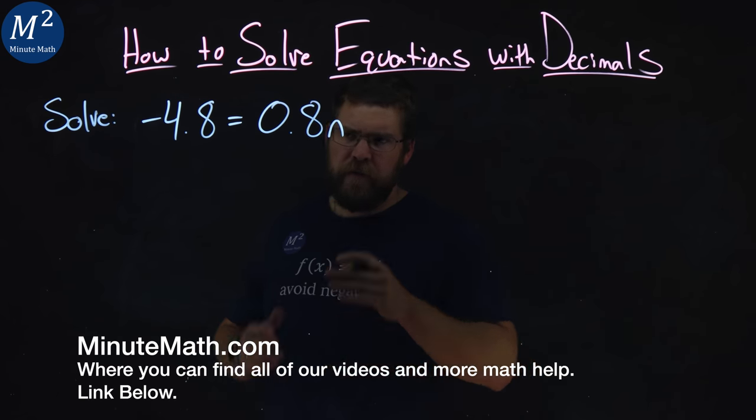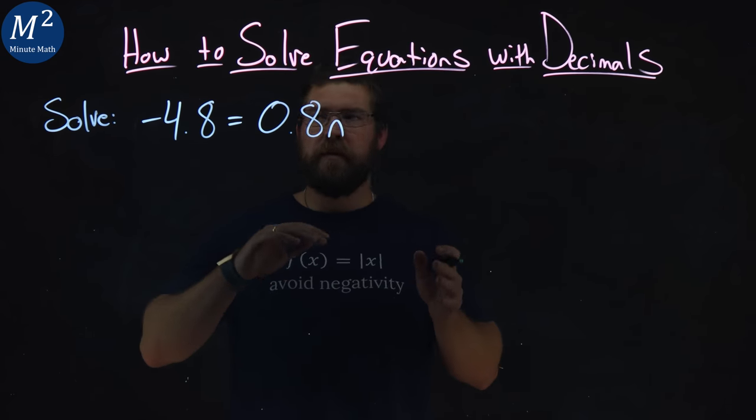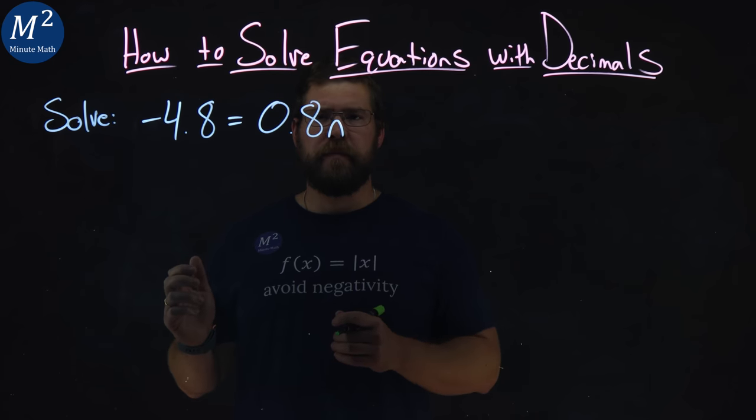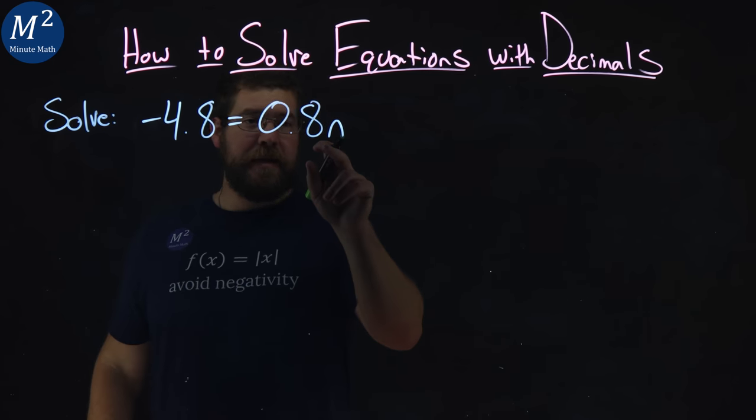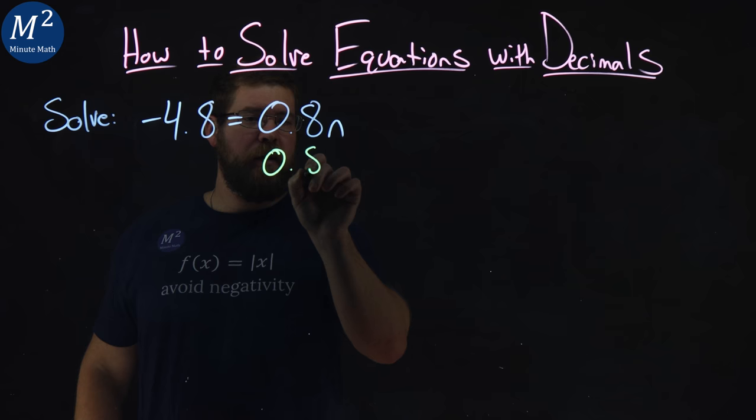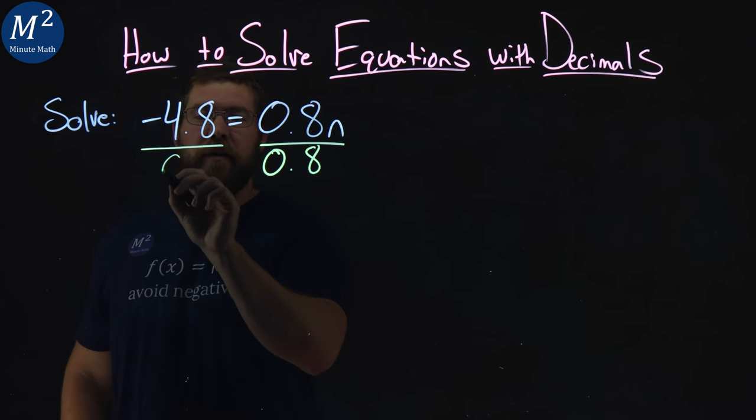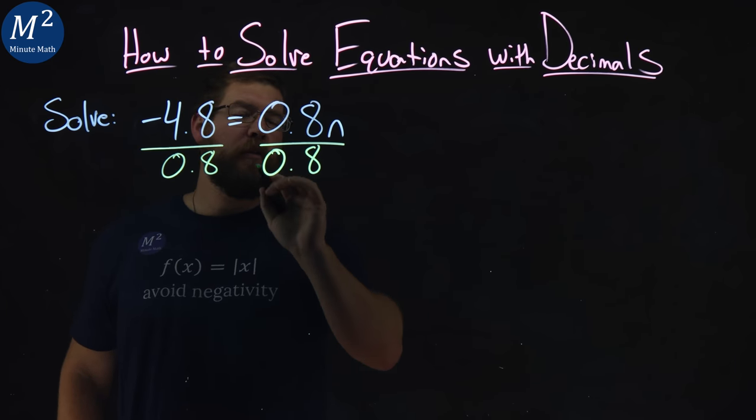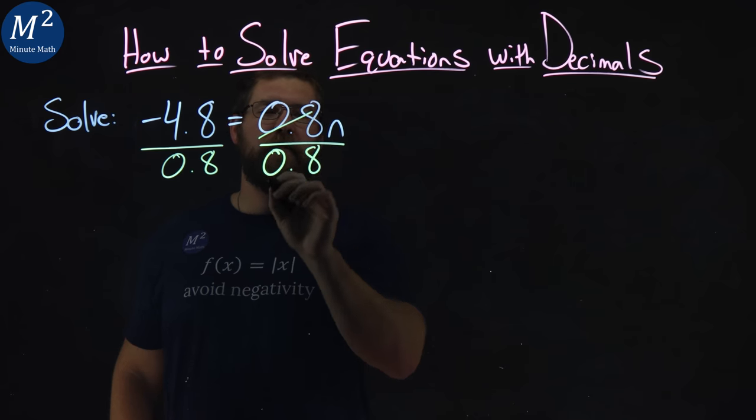Now, the division property of equality states that we can divide one number to both sides of the equation. If we choose that number to be 0.8, we divide to both sides of the equation here, the 0.8 on the right will cancel out.